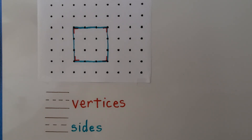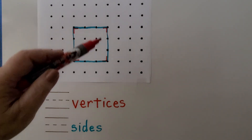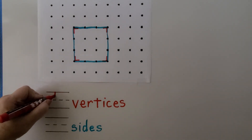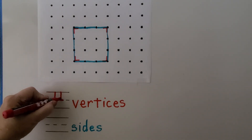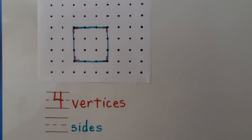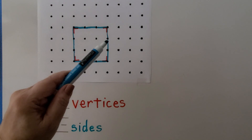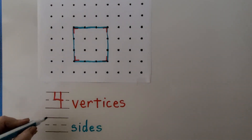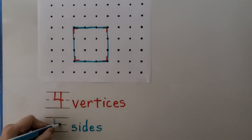So how many vertices does a square have? It has one, two, three, four vertices. And how many sides does a square have? It has one, two, three, four sides of equal length.